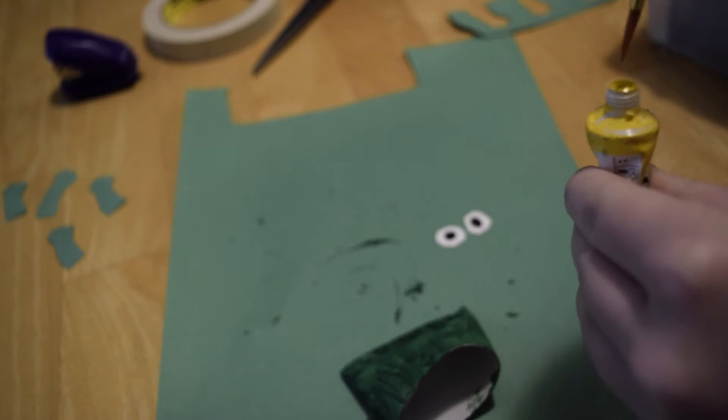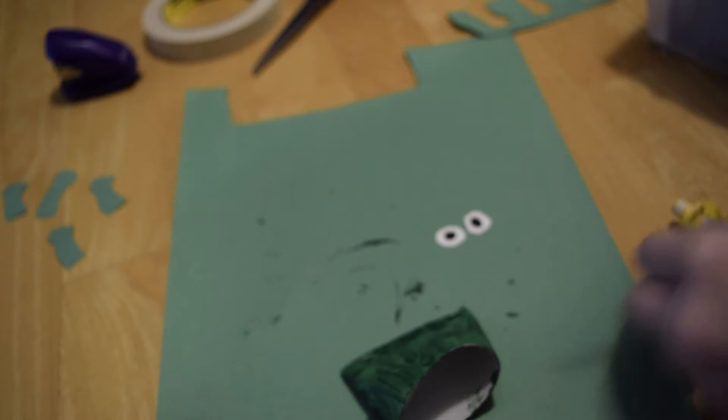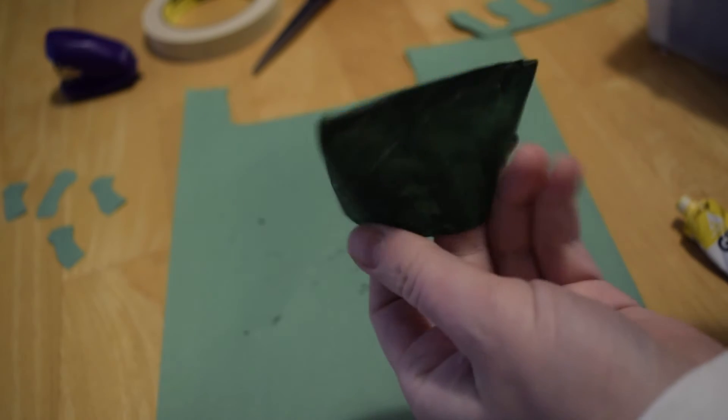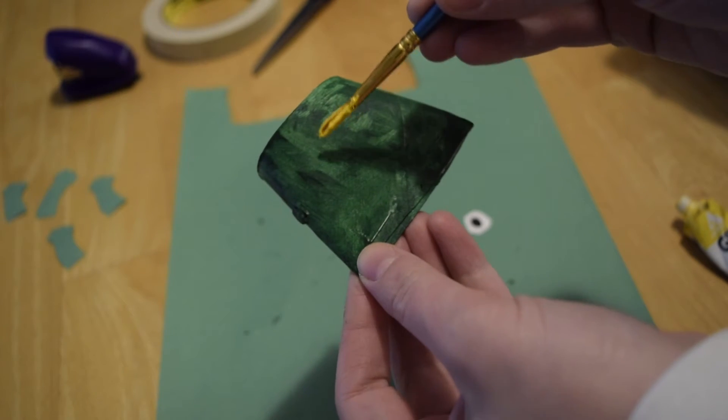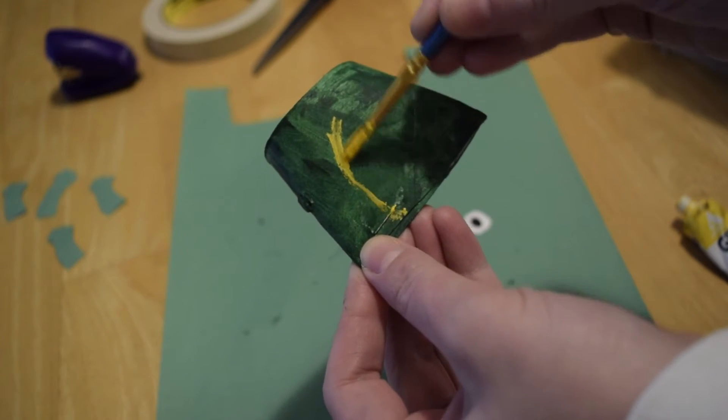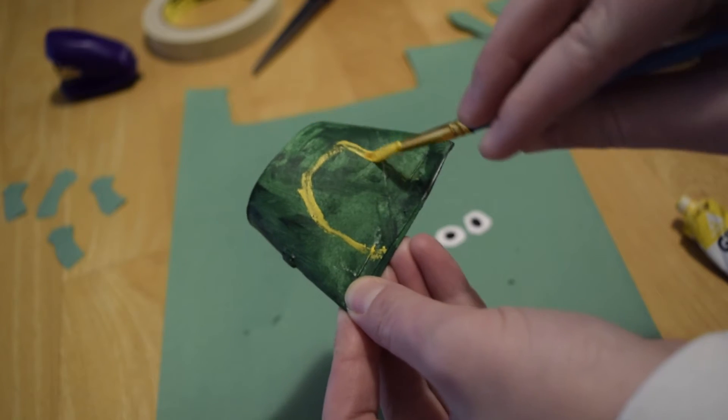All right, our main body is dry, so I'm going to take my smaller paintbrush and get some yellow details onto the frog. Let's see, Chester said he wanted a belly, so we're going to choose to make this part the belly and paint some yellow on there for the belly.